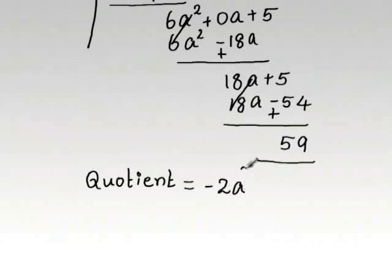Here, minus 2a squared minus 6a minus 18 is the quotient. We can check the division algorithm, the result we got in this question.